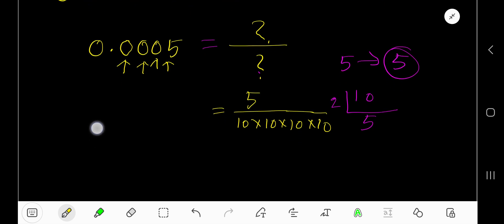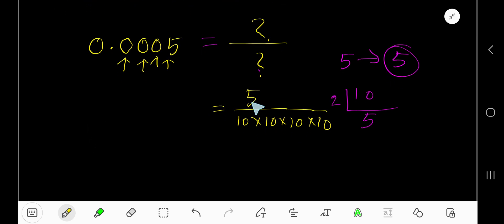Now to simplify this fraction, we need to reduce it. How to do that? Divide this 5 by 5, you will get 1. Divide this 10 by 5, you will get 2.